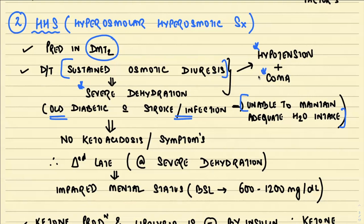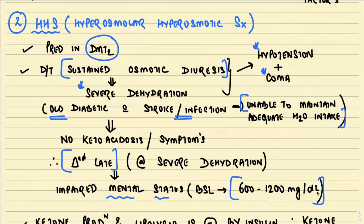In HHS, there are no signs or symptoms of ketoacidosis such as nausea, vomiting, abdominal pain, or Kussmaul breathing. Because of the absence of ketoacidosis symptoms, it is diagnosed very late, at a very severe stage of dehydration. The patient has an impaired mental status and blood sugar levels usually in the range of 600 to 1200 mg/dL.